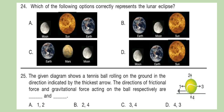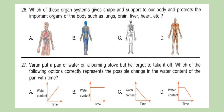Question 25: The given diagram shows a tennis ball rolling on the ground in the direction indicated by the thickest arrow. The directions of frictional force and gravitational force acting on the ball respectively are dash and dash. Question 26: Which of these organ systems gives shape and support to our body and protects the important organs such as lungs, brain, liver, and heart?